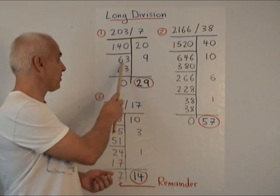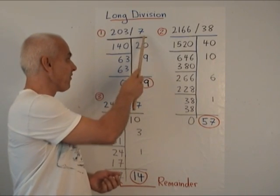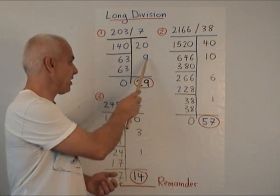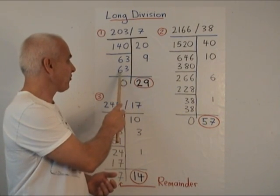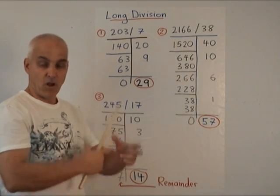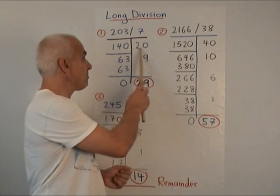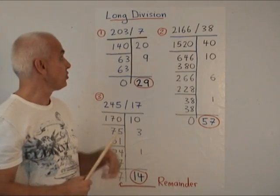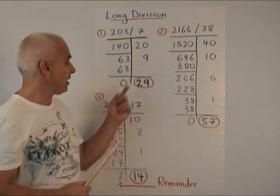How many sevens are there in 63? We remember from our multiplication tables that 7 times 9 is 63. So we peel off nine more sevens, subtract that to get a remainder of zero. And altogether what we've done is we've subtracted 29 sevens. And so 203 divided by 7 is 29.